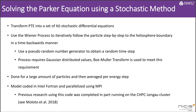The stochastic model consists of first transforming the Parker transport equation into a set of Ito stochastic differential equations. This uses the Wiener process to iteratively follow the particles step by step as they travel in a time-backwards manner. A pseudorandom number generating algorithm is used to obtain a random time step. The process requires that the random values be Gaussian distributed, and to achieve this, a Box-Muller transform is used. Also, the values should not be correlated in any way. The model runs over large particle counts, which were then averaged over defined energy steps.